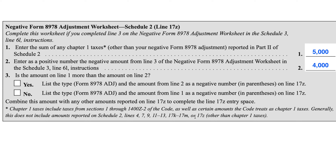Also excluded are golden parachute payments, tax on the accumulation and distribution of trusts, excise tax on insider stock compensation from expatriated corporations, and other taxes listed on Line 17Z that are not Chapter 1 taxes. By default, that means everything else reported in the rest of Schedule 2 is included — such as Line 8, which is the additional taxes on IRAs using IRS Form 5329, and Line 10, which is the first-time homebuyer credit on Form 5405.